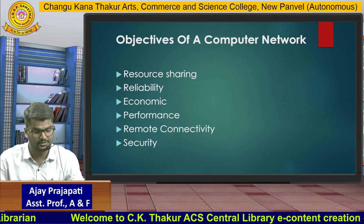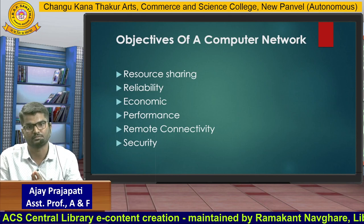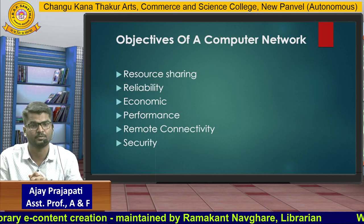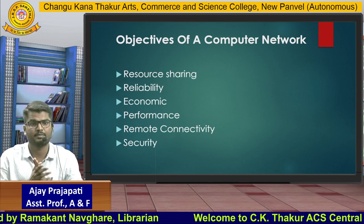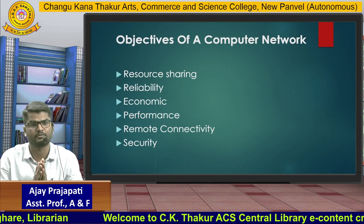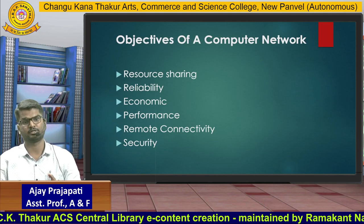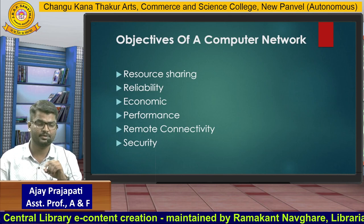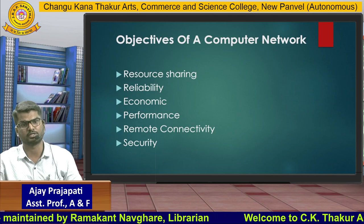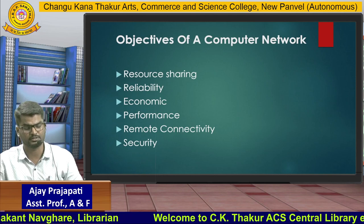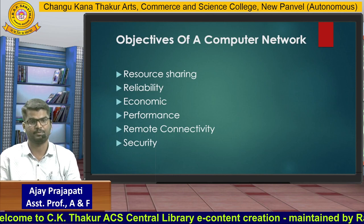The fourth objective is performance — we can see how the network performs when we share a file, for example how much time it takes. Performance is important because when sharing a file, it should complete within a second or a few seconds. The fifth objective is remote connectivity — you can share your files from any remote location and you don't need to sit at one particular place to share those files.